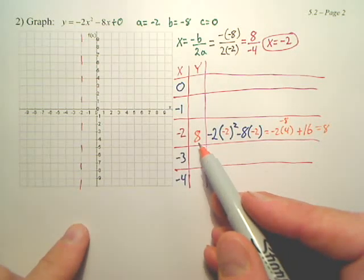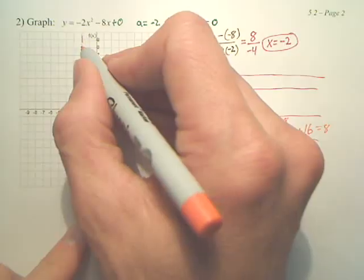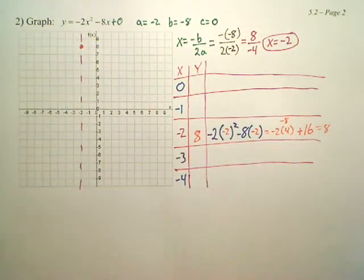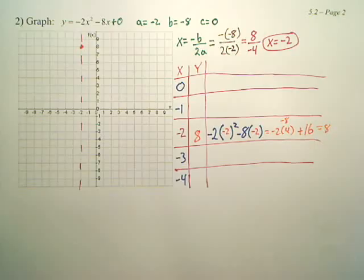Negative 2, 8 is right here. Over negative 2, up 8. That's a coordinate. Now we need to get some more coordinates.